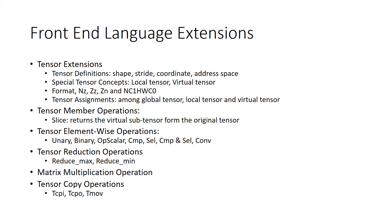For the language extension, we extend the tensor concept by adding shape, stride, coordinate, and address space information to the tensor definition. There are two special tensor concepts: one is the local tensor, and the other is the virtual tensor.